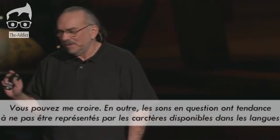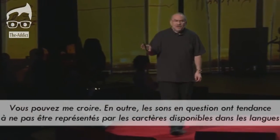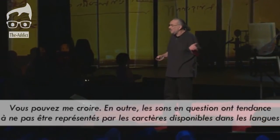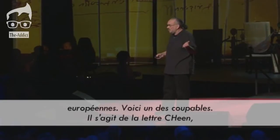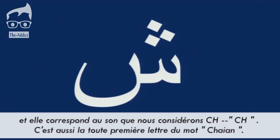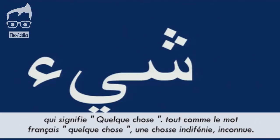One problem is that there are some sounds in Arabic that just don't make it through a European voice box without lots of practice — trust me on that one. Also, those very sounds tend not to be represented by the characters available in European languages. Here's one of the culprits: this is the letter sheen, and it makes the sound we think of as 'sh.' It's also the very first letter of the word sheen, which means something — just like the English word 'something' — some undefined, unknown thing.